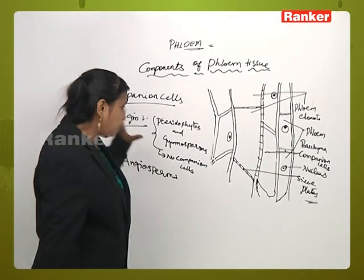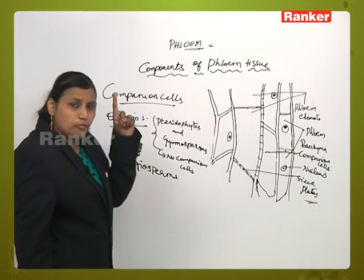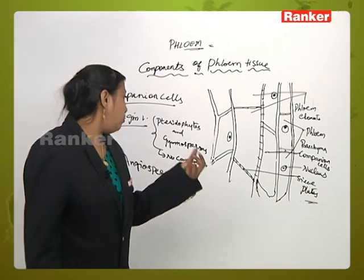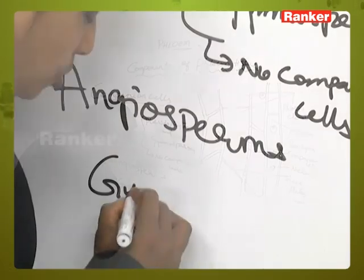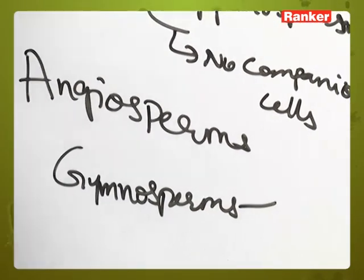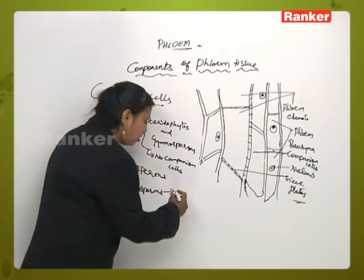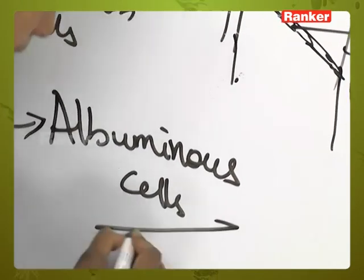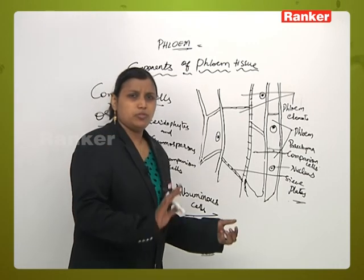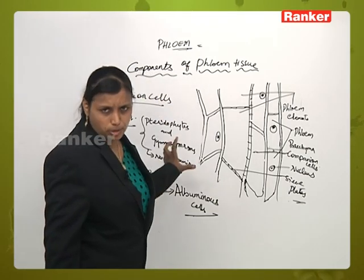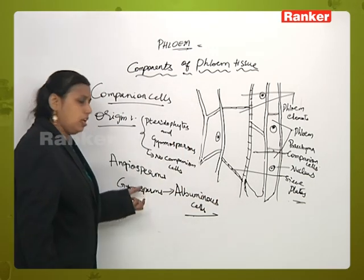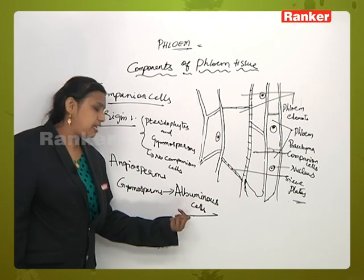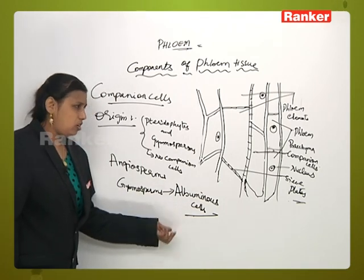In gymnosperms, we cannot see companion cells, but we can see another specialized structure which is more or less equal in function but similar in structure to companion cells. In gymnosperms, we see a specialized storage parenchyma called albuminous cells. So in pteridophytes and gymnosperms there are no companion cells, and in gymnosperms another specialized modified structure — comparable to companion cells and helpful in the storage of food material — is present: those are called albuminous cells.